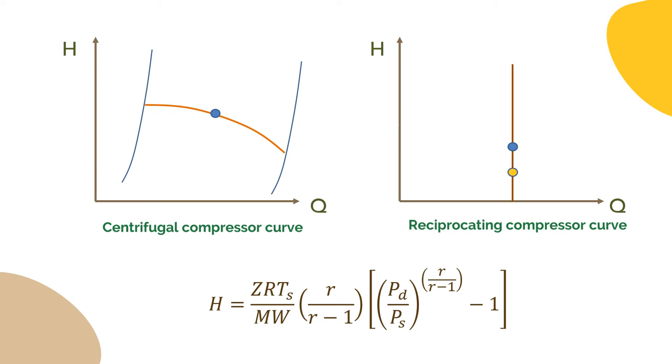On the other hand, we may need to keep the flow. In this case the compressor still gives a constant head, but the outlet pressure varies.